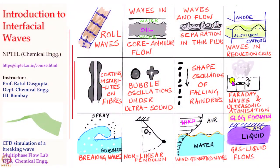For example, in the natural world one encounters such interfacial waves through the oscillations of raindrops. These oscillations have influenced the measurement of the rate of rainfall.